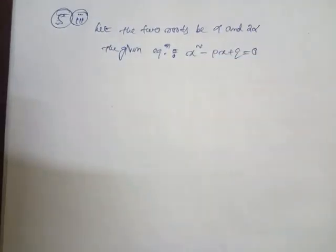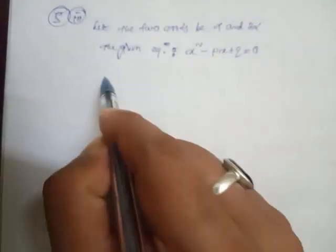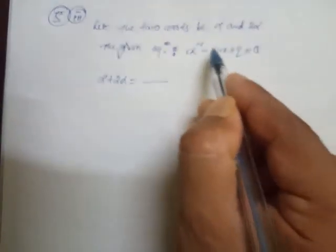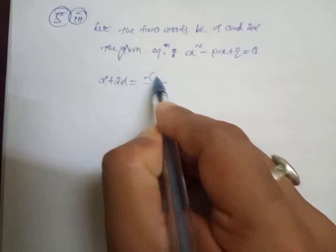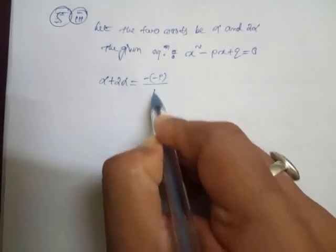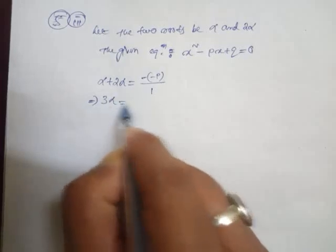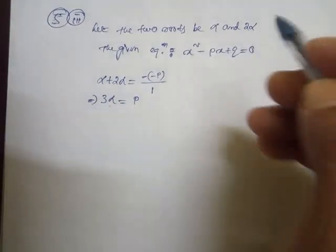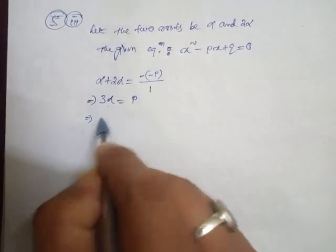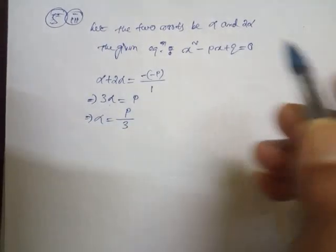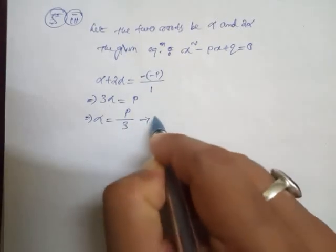Now look student, here sum of the roots which means alpha plus 2 alpha equal to minus b by a. What is minus b here? Minus p by 1. So 3 alpha equal to p. And student, here alpha equal to p by 3. I am taking this one as our equation number 1.